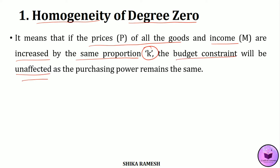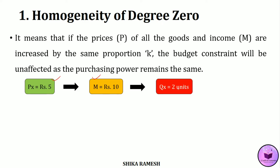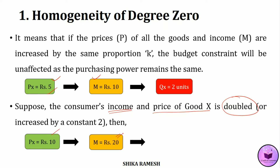For example, suppose the price of one unit of good x is rupees 5 and the consumer's income is rupees 10. With this income and price, the consumer will purchase two units of good x. Now suppose the consumer's income and price of good x are both doubled, so the price becomes rupees 10 and income becomes rupees 20. The consumer will still purchase the same two units of good x. Even though price and income increased by the same proportion, the consumer's purchasing power remains the same.